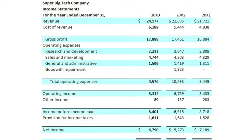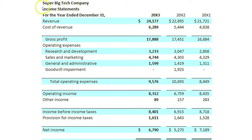For this topic, we will analyze a simple, comparative, multi-step income statement for a three-year period. The company, Super Big Tech Company, is fictitious, but you can imagine that it competes in the same industry as Microsoft.